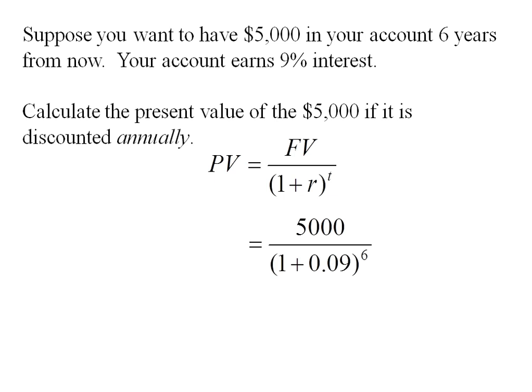Here's my formula. I'll plug in 5,000 for the future value, 0.09 for my interest rate, and 6 for the number of years. The present value of $5,000 is $2,981.34.